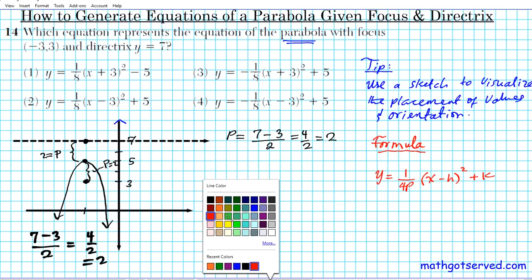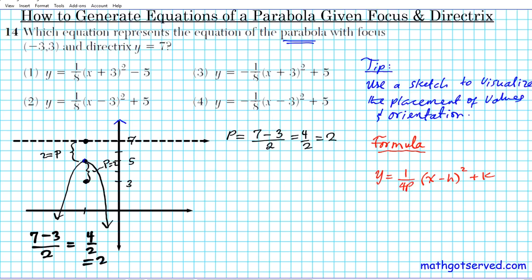What is (h, k)? (h, k) is just the vertex of the parabola. This point right here is the vertex. So the vertex has a y-coordinate of 5, and the x-coordinate is -3. So the vertex is (-3, 5).